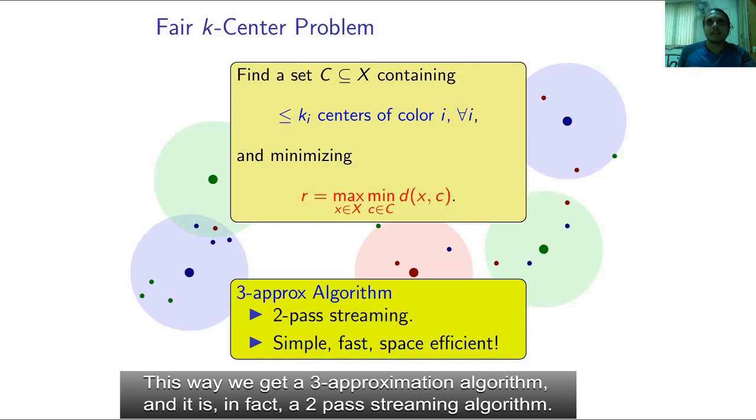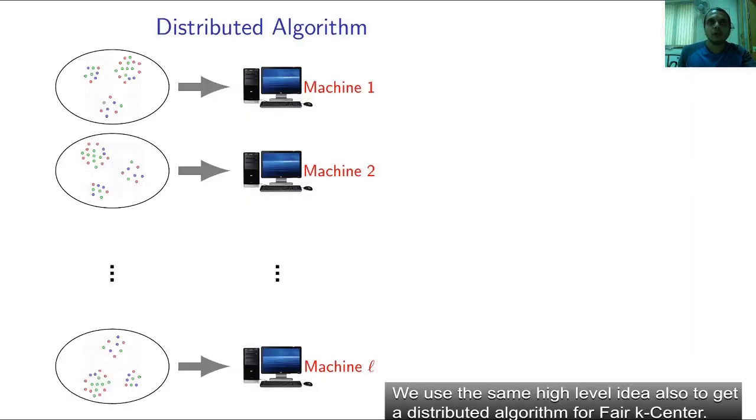This way we get a three approximation algorithm and it is in fact a two-pass streaming algorithm. We use the same high level idea also to get a distributed algorithm for fair k-center.